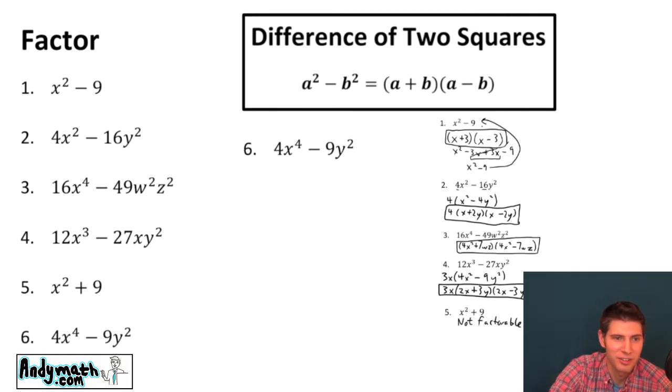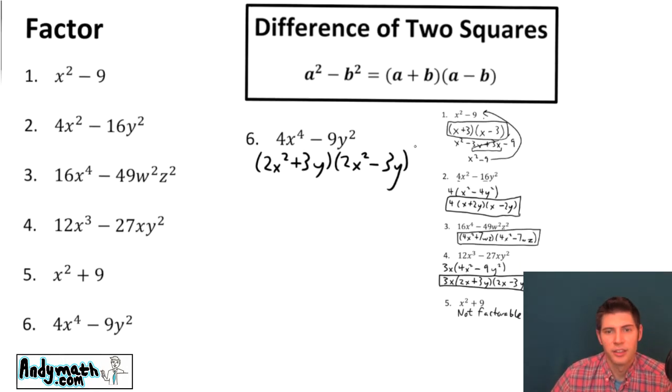And last one, number six. So there's no GCF here. So we're just going to write out our two sets of parentheses. Then square root of 4 is 2. And the square root of x to the 4 is x squared. And then we have our plus minus. Square root of 9 is 3. And square root of y squared is y. And that's it. That's the answer. We are now done with all of these.